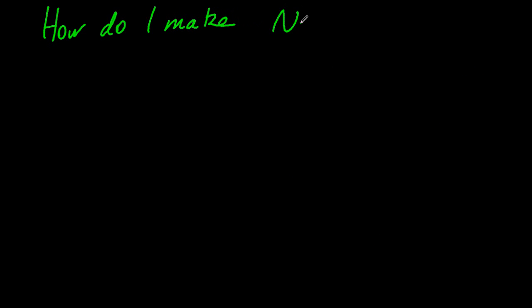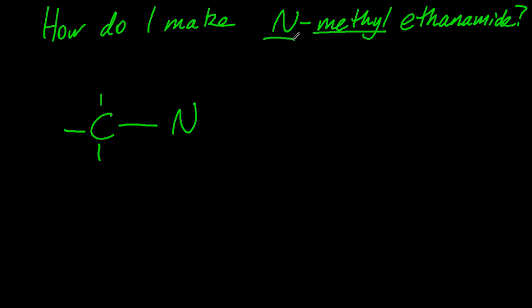Let's try to do the reverse. How do I make N-methyl ethanamide? Well, first of all, let's draw that out as the methyl group. Attach it to the N. Ethan, well, that's two carbons. And let's try and make an amide here. OK, that's an amide.